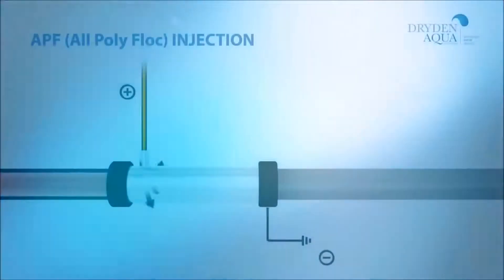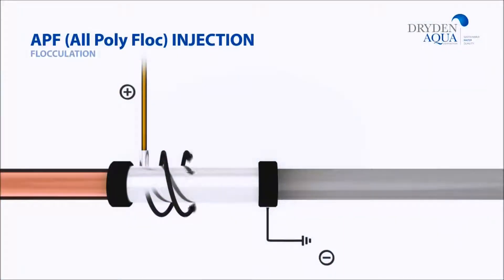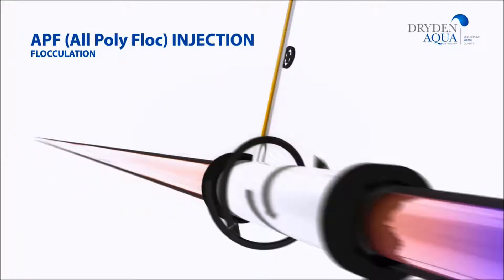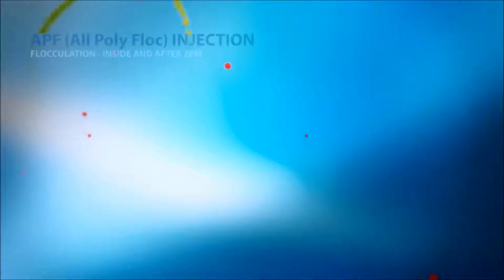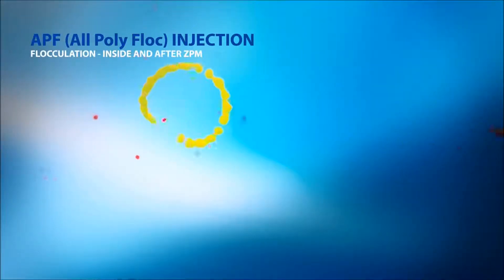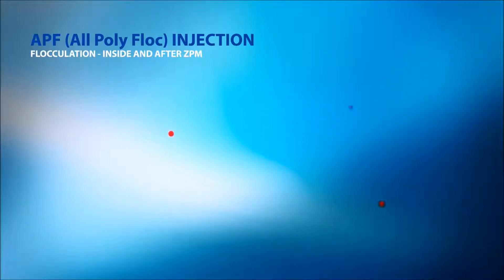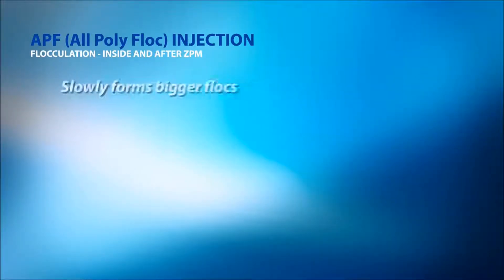The second feature of APF is that it's a strong flocculant. The positive charge of the poly-electrolyte molecules in APF act like a fishing net and trap all particles including floc, bacteria and parasites such as cryptosporidium to form bigger and more stable floc. This takes time, and that's why the filtration velocity needs to be slow to increase the reaction time of APF.